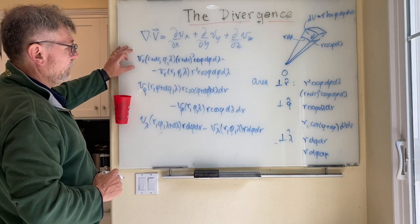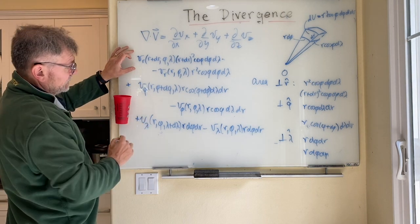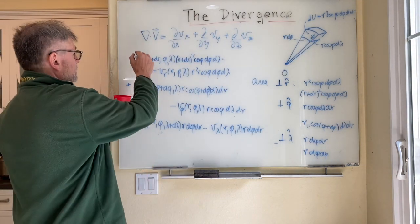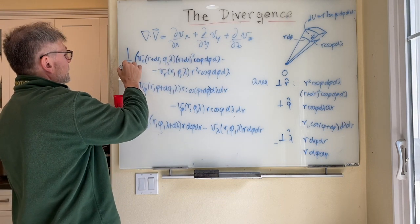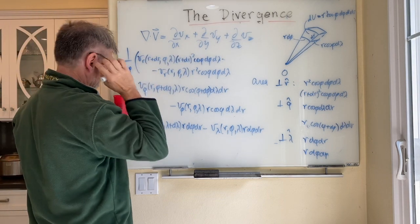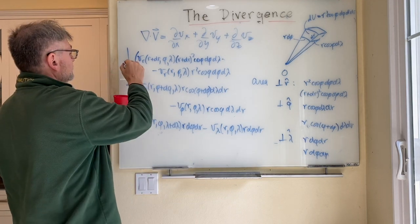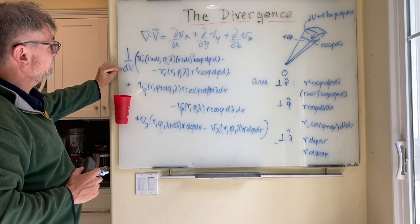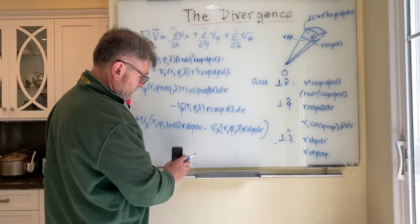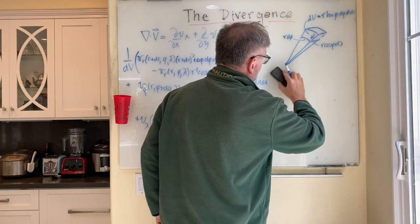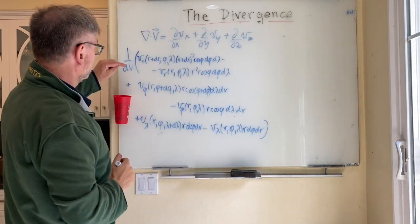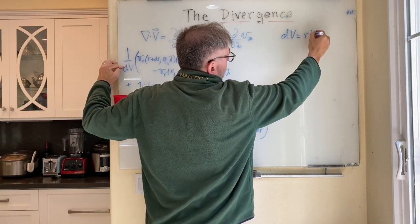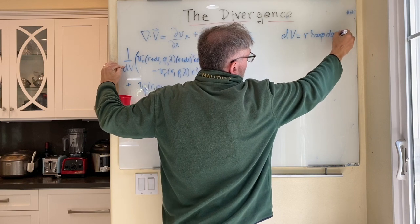This is the sum of the outward flux through my little unit volume. To get the divergence, I divide by one over the volume, which is r squared cos phi, or equivalently 1/dv. And if I take the limit as dv goes to zero, this will equal the divergence. The volume element dv is r squared cos phi d phi d lambda dr.